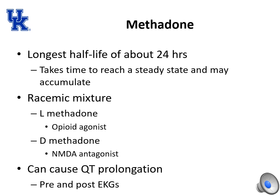Methadone is the opioid with the longest half-life, about 24 hours. It takes time to reach steady state and may accumulate in that time. It is a racemic mixture of L-methadone and D-methadone — L-methadone is the opioid agonist and D-methadone is the NMDA antagonist. Be cautious because methadone can cause QT prolongation; obtain a pre-EKG before starting and a post-EKG approximately 24 hours after starting.